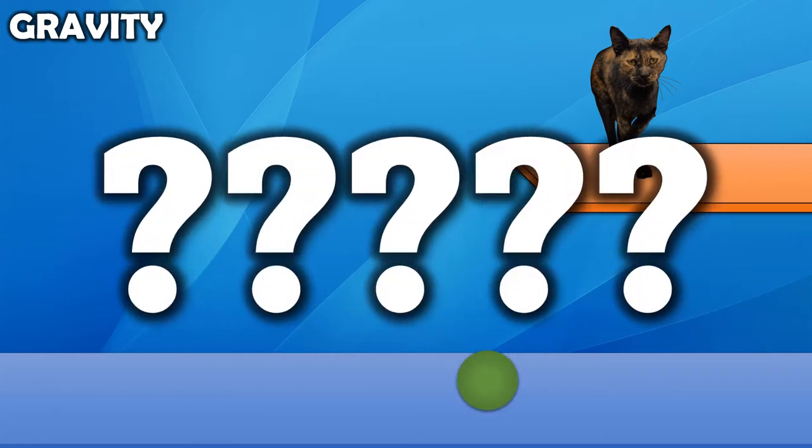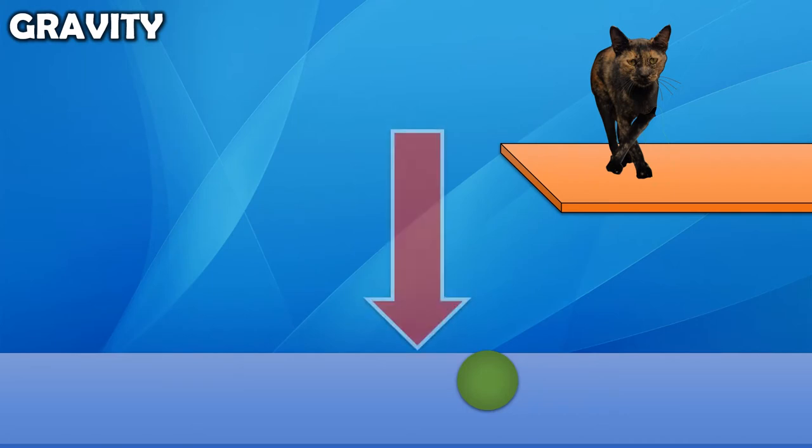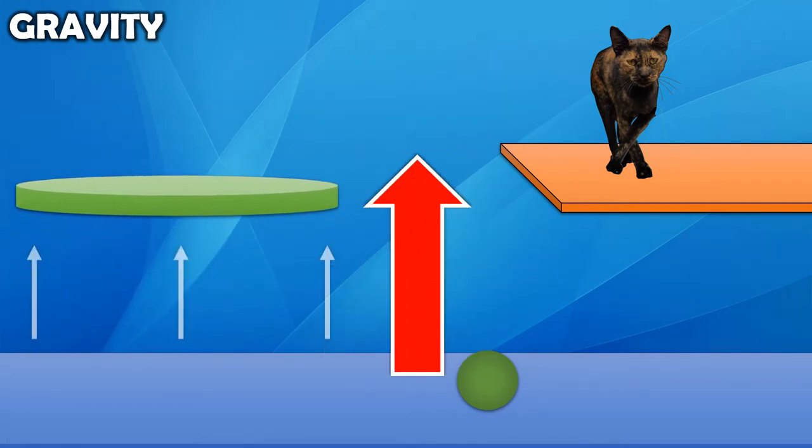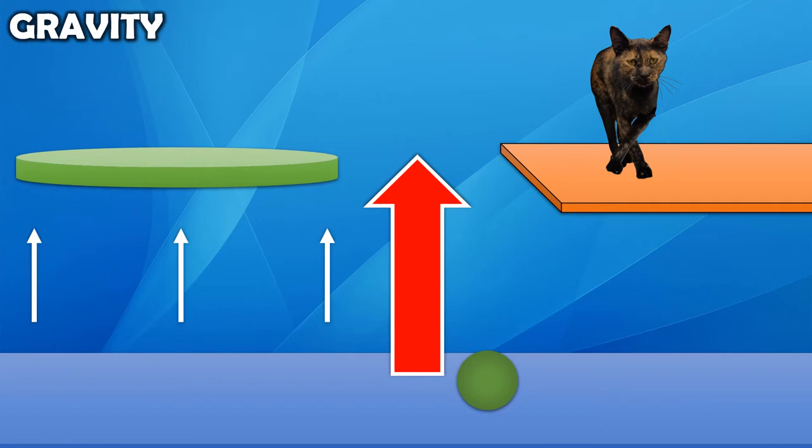According to flat Earth theory, whenever a ball is dropped from a height, the ball is not falling down to Earth. Instead, the Earth, being a flat disk, rises upward at a constant speed to meet the ball.